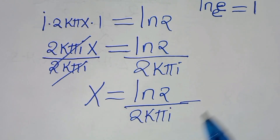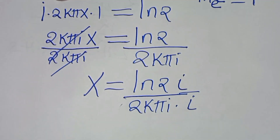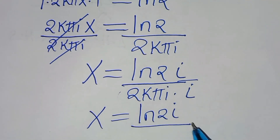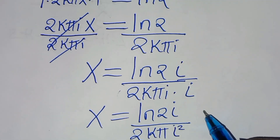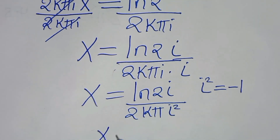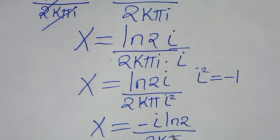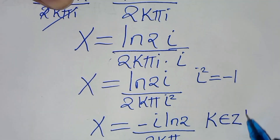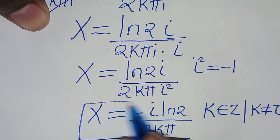The next step is to rationalize the denominator by multiplying both numerator and denominator by i. We get x equals i·ln(2) divided by 2kπ·i², and since i² equals −1, this implies that x equals negative i·ln(2) divided by 2kπ, where k is a member of the integers and k is not equal to 0. This is the value of x.